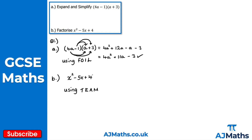I'll pick two numbers that multiply to get 4. Sometimes you spot them straight away, sometimes it takes trial and error. Options include: 2 and 2, 4 and 1, minus 2 and minus 2, and minus 4 and minus 1.